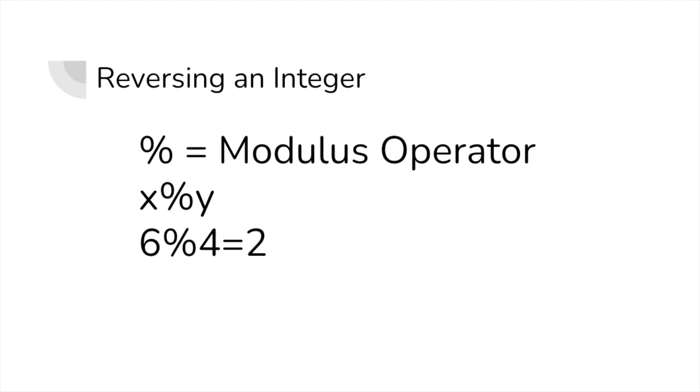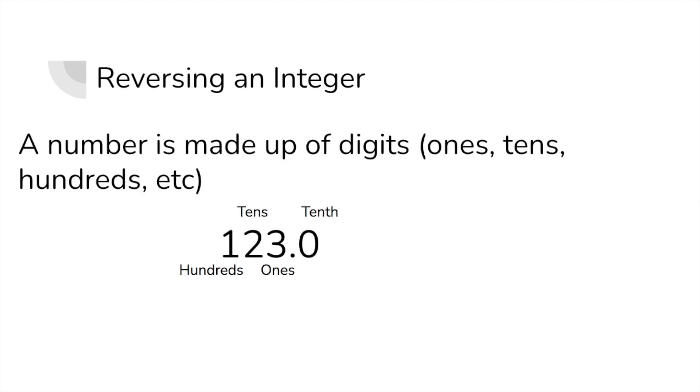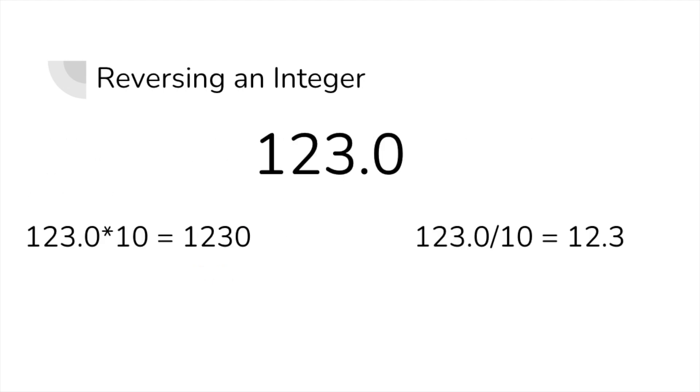The reason we want to be using modulus here is to help isolate the digits. We know that whenever we want to shift the decimal point in a number by 1, we either multiply or divide by 10.